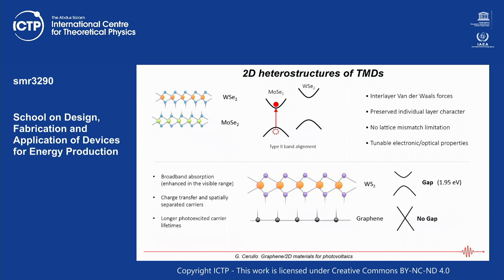If you excite the MoS₂ — the lower energy semiconductor — you create an electron in the conduction band and a hole in the valence band. Holes tend to go up in energy, so the hole finds the higher-energy state in WS₂ and there is a very fast hole transfer. The hole goes to the other material that was not directly excited by light, spatially separating the electron and hole. You get a bound electron-hole pair with the electron and hole on different layers — called an interlayer exciton — with completely different properties.